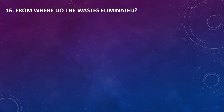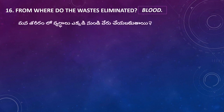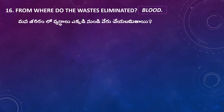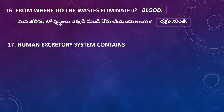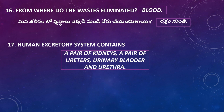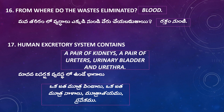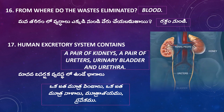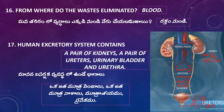From where do wastes get eliminated? The answer is Blood. The human excretory system contains a pair of kidneys, a pair of ureters, a urinary bladder, and a urethra.